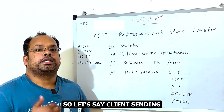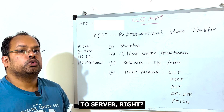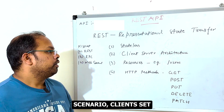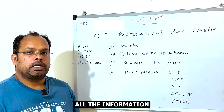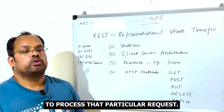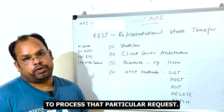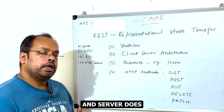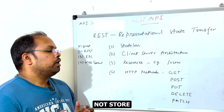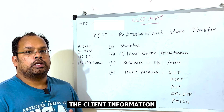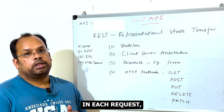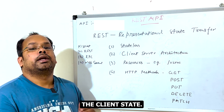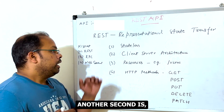Let's say the client is sending a lot of requests to the server. In this scenario, the client sends all the information which is essentially required to process that particular request, but each request is independent and the server does not store the client information between requests. That means stateless — the server never knows the client state.